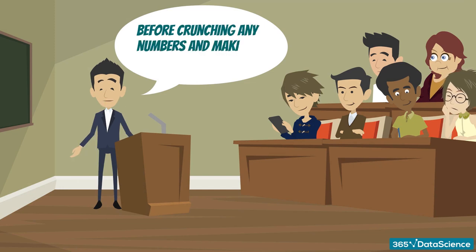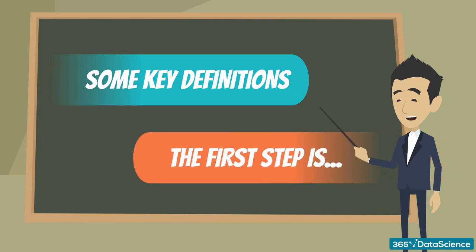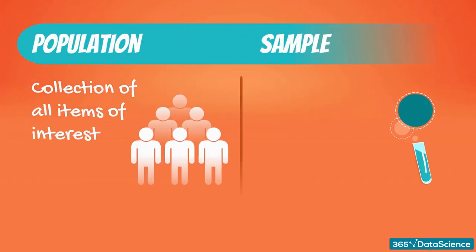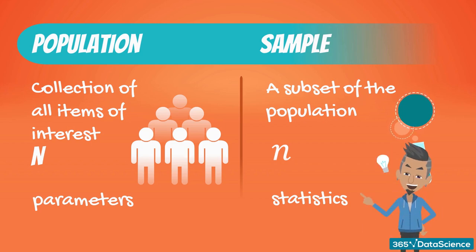Before crunching any numbers and making decisions, we should introduce some key definitions. The first step of every statistical analysis you perform is to determine whether the data you are dealing with is a population or a sample. A population is the collection of all items of interest to our study and is usually denoted with an uppercase N. The numbers we've obtained when using a population are called parameters. A sample is a subset of the population, denoted with a lowercase n, and the numbers we've obtained when working with a sample are called statistics. Now you know why the field we are studying is called statistics.